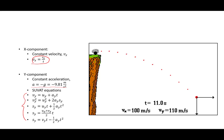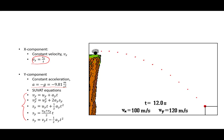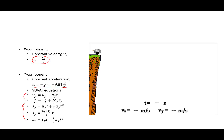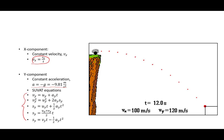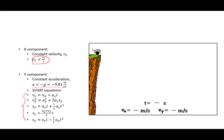Here are our SUVAT equations: v equals u plus at; v squared equals u squared plus 2as; s equals ut plus one-half at squared; s equals the average of u plus v times time; s equals vt minus one-half at squared. I've added y subscripts just to make sure that we're only thinking in the y direction.